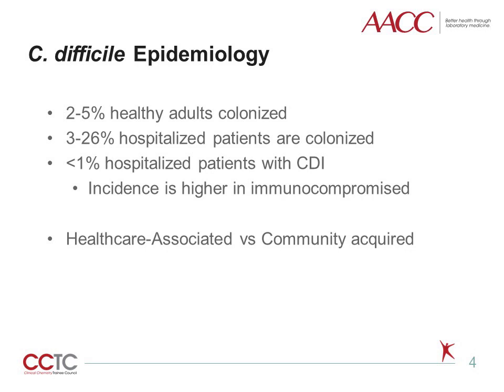C. difficile infection occurs in less than 1% of hospitalized patients in the U.S., but the incidence has doubled in the past three decades. C. difficile is now the most common nosocomial pathogen. Infection incidence is higher in immunosuppressed populations, such as solid organ or stem cell transplant recipients, and is especially prevalent among individuals with frequent healthcare exposure, including nursing home residents and dialysis patients.